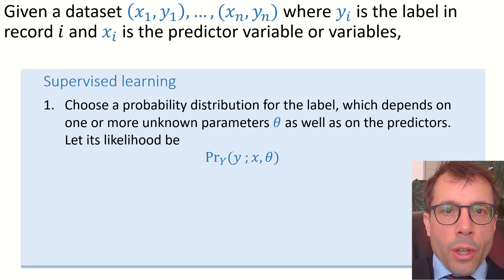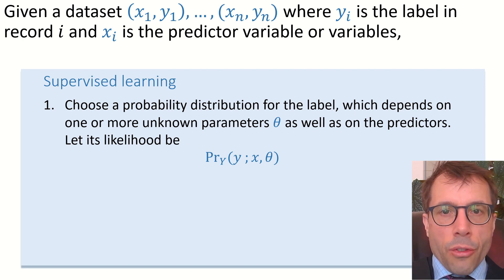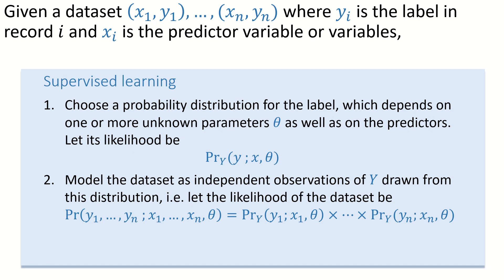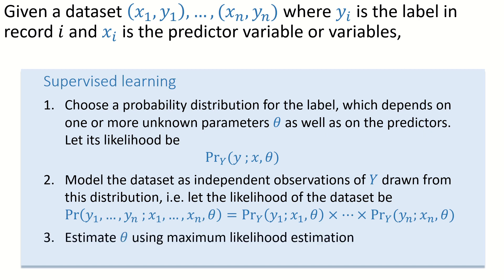Let's say the likelihood is the likelihood for big Y of little y with parameters x and theta. Next, we'll assume that the data set consists of independent observations of the random variable big Y drawn from this distribution. Independence means the likelihood of the entire data set is the product of the likelihoods of the individual data points. Last, we estimate theta using maximum likelihood estimation.